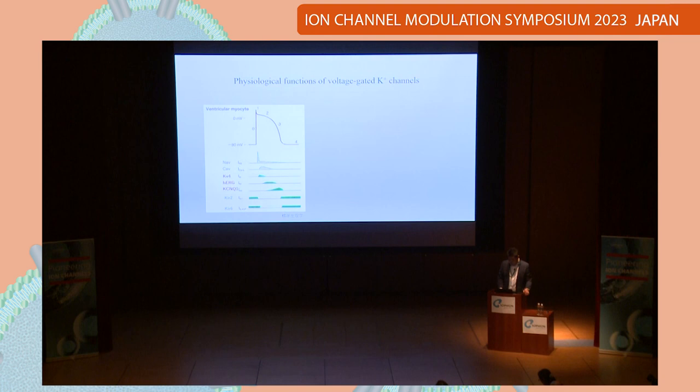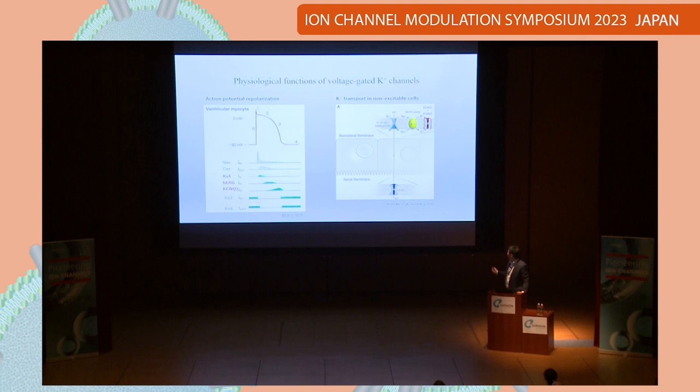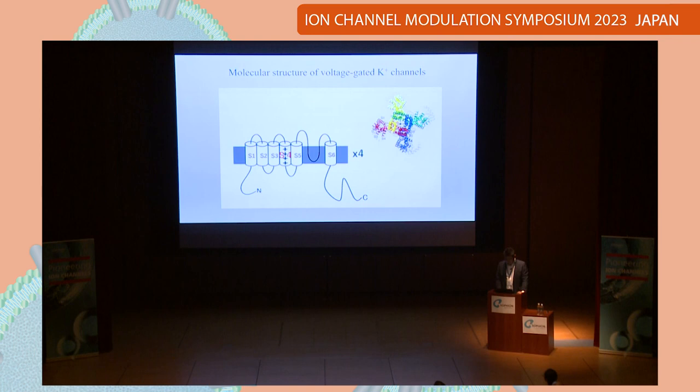Voltage-gated potassium channels also have roles in non-excitable cells. In this example, the KCNQ1/KCNE3 complex helps chloride transport by recycling potassium in epithelial cells.